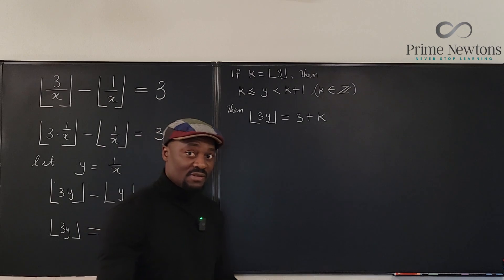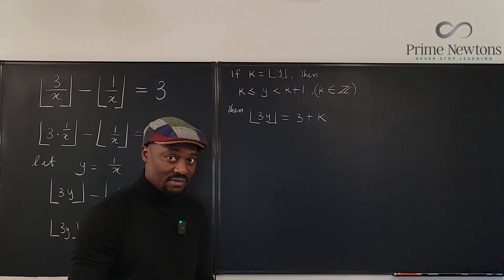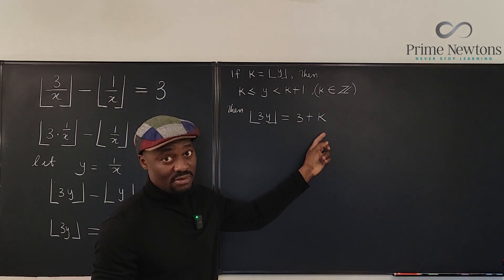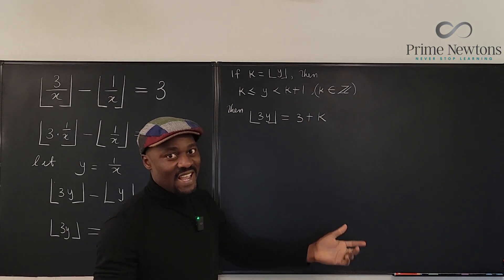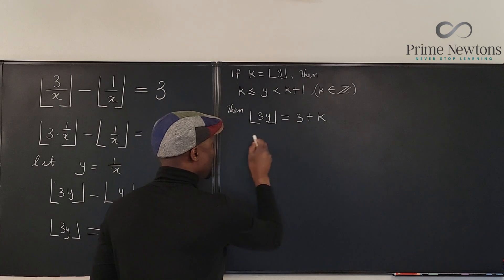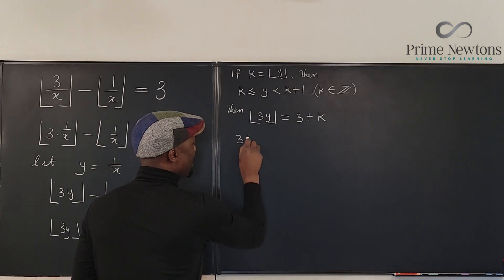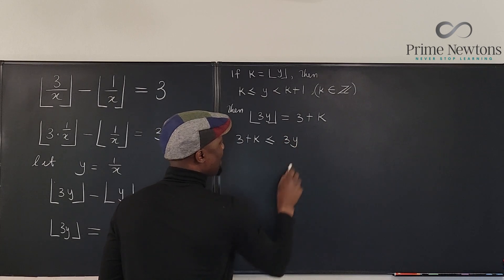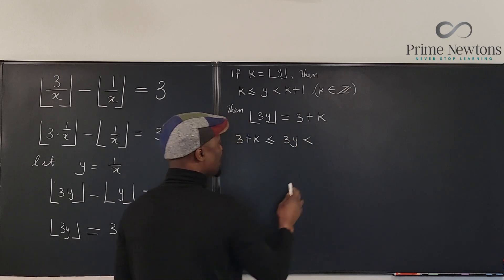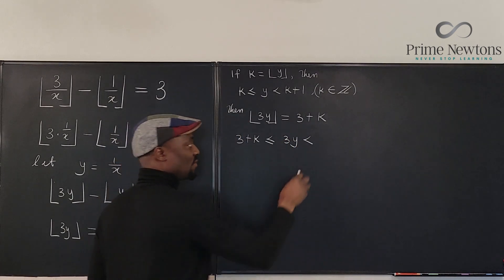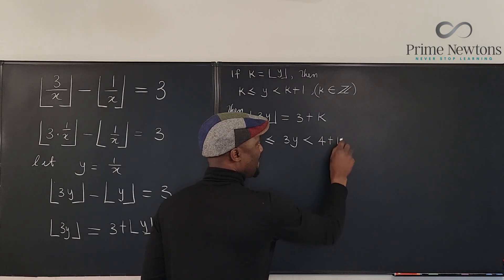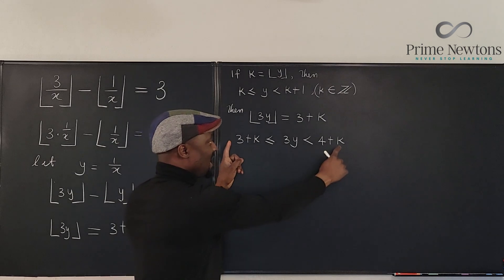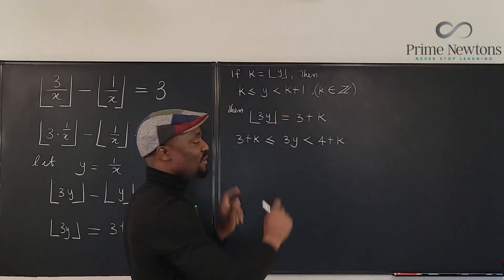And remember the definition of the floor of a function. If the floor of a function is an integer, which is an integer we know it's always an integer, it is always less than the number. So we from here we know that 3 plus k is less than or equal to 3y, and 3y is less than one added to this, which is going to be 4 plus k.